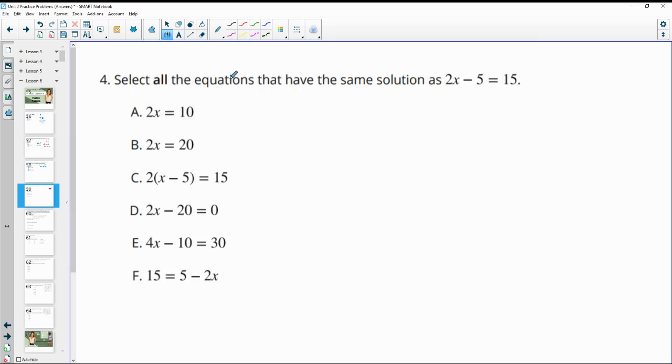Number 4, select all equations that have the same solution as this equation. So for part A, so A and B are very similar, right? They've got the 2x. We have to see which one of these, 10 or 20, is correct. So in order to kind of get rid of this negative 5, we would have to add 5 to both sides. And that's because then we just have 2x, negative 5 plus 5 is 0, and then 15 plus 5 is 20. And then 2x plus 0 is just 2x. So A is incorrect, but B would be correct.